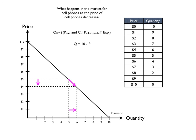So in the example here, when we have a market for cell phones and the price of cell phones decreases, the quantity demanded increases. That's movement along the demand curve, not a change in demand. This concludes part two of our series on demand.